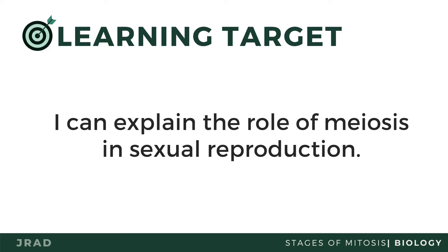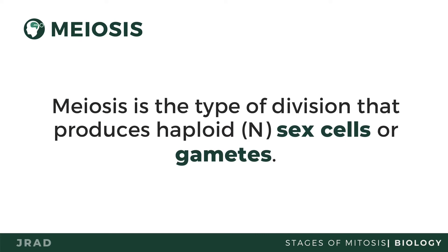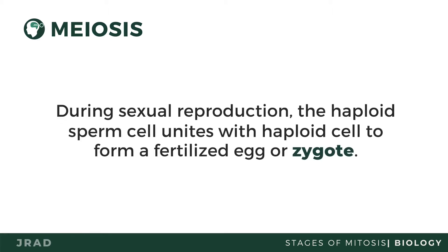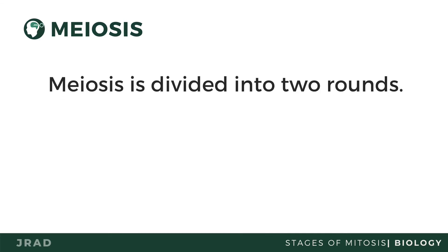Meiosis is the type of cell division that produces haploid sex cells or gametes. It takes place in the ovaries or testes of animals, including humans. During sexual reproduction, the haploid sperm cell unites with the haploid egg cell to form a fertilized egg, or zygote, which is diploid. The haploid gametes are produced through meiosis.